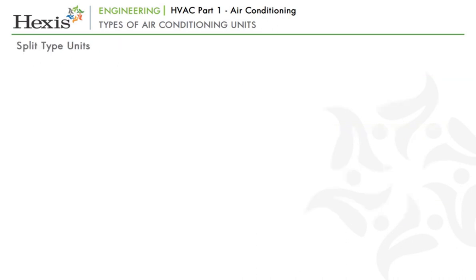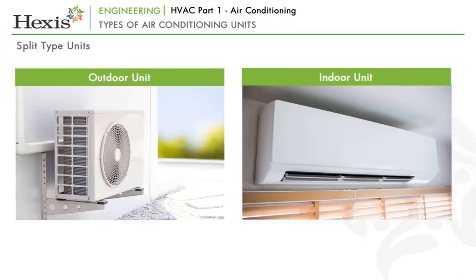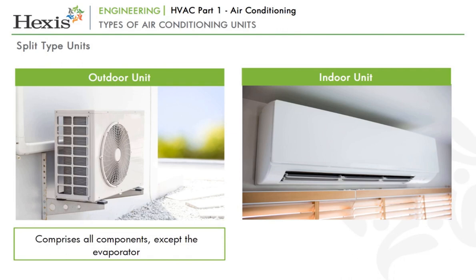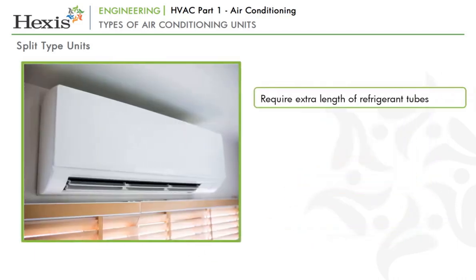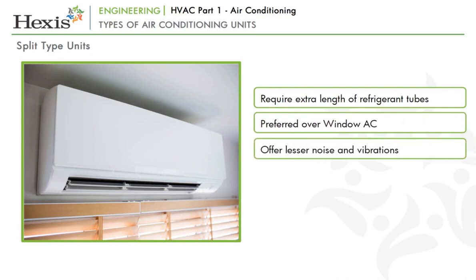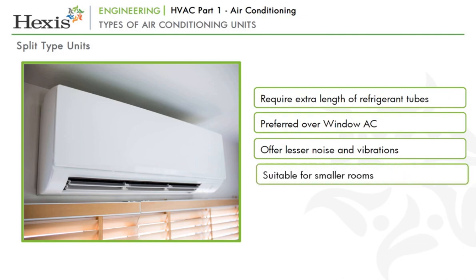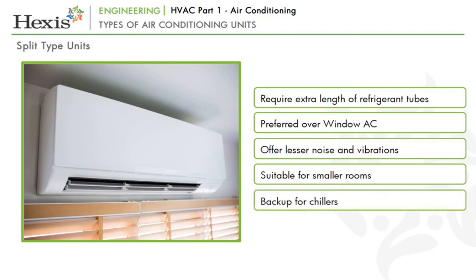Split type units are the next most commonly used air conditioning systems. These units are divided into two parts — an outdoor unit and an indoor unit. The outdoor unit comprises all components except the evaporator, which is placed inside the room to be cooled. Split ACs require extra length of refrigerant tubes to connect the outdoor unit to the indoor unit, but are preferred over window ACs because they offer lesser noise and vibrations. Split units are suitable for smaller rooms, and two or more units can be deployed for rotation and redundancy. They are also useful as a backup for chiller-cooled systems, reducing chiller running time during off hours and saving on utility bills.